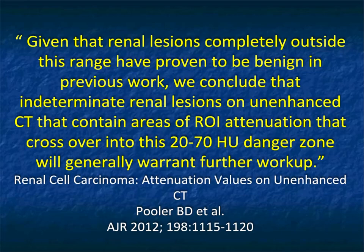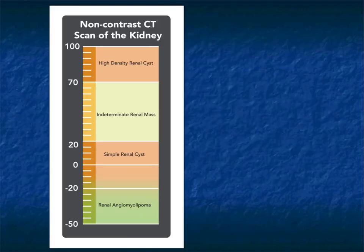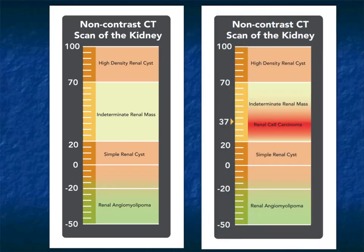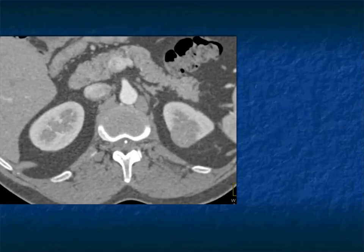We can really cone down into what patients we need to worry about, which is especially helpful in the ER with a non-contrast CT. On a non-contrast scan: over 70 is high-density; 20 to 70 is indeterminate; 0 to 20 is a simple cyst; and minus 20 to minus 50 is a renal angiomyelolipoma. Again, 37 was the magic number for cancer, but that 20-to-70 range gives you a lot of leeway.